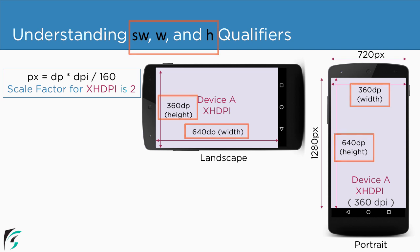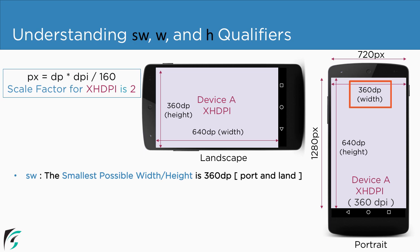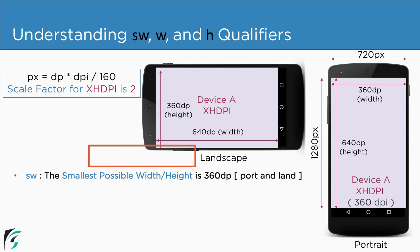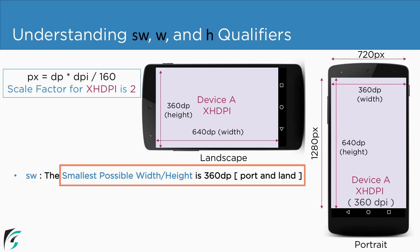To understand it better, let us define what SW is. SW represents the smallest possible width and height, irrespective of screen orientation. Therefore, in portrait mode, among these two values, we have 360 dp as the smallest width. Similarly, in landscape mode, among these two values, we have the smallest value as 360 dp as height. So the SW value becomes 360 dp for both portrait and landscape mode.